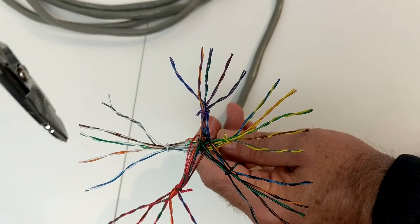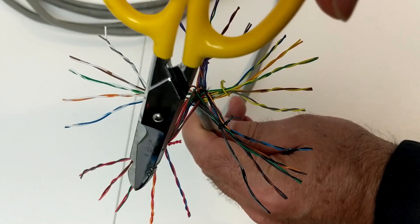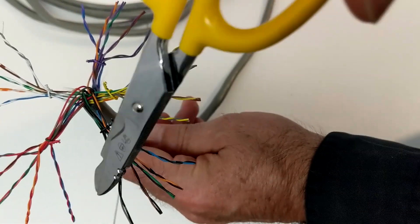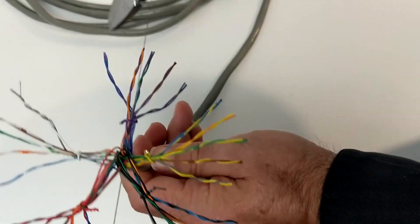So in the white group I've got blue, orange, green, brown, slate. In the red group I've got blue, orange, green, brown, slate. In the black group blue, orange, green, brown, slate. Yellow, same thing: blue, orange, green, brown, slate. And then lastly in the violet group blue, orange, green, brown, slate.